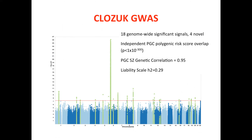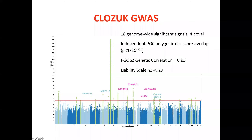The CLOZUK GWAS gave 18 genome-wide significant signals, four of which were novel. Notably, even in this relatively modest sample we get a genome-wide significant signal at the DRD2 locus. The polygenic overlap and genetic correlation with the wider PGC were very high, reassuring us that combining these was sensible. The SNP-based heritability on the liability scale for this clozapine case series was 0.29.